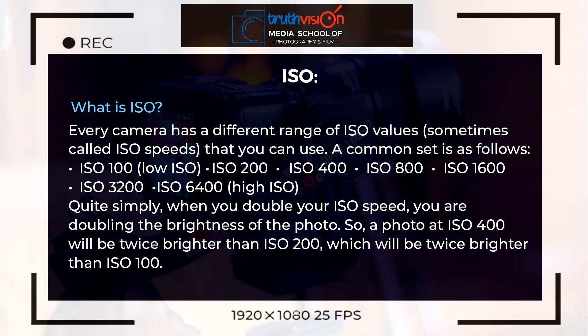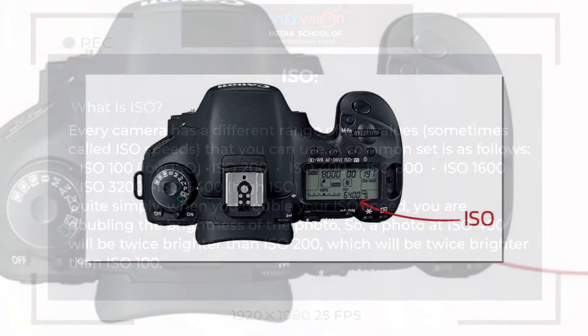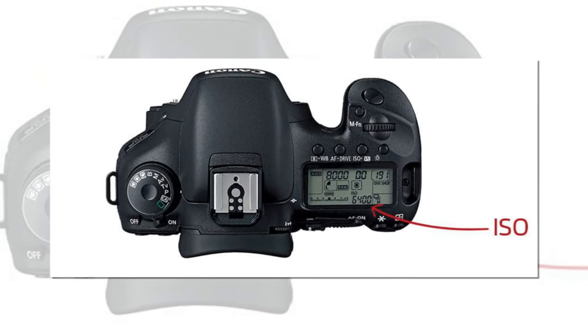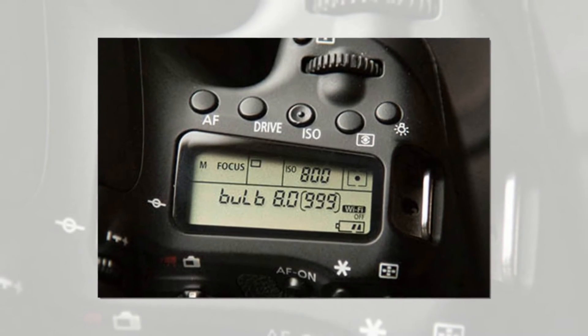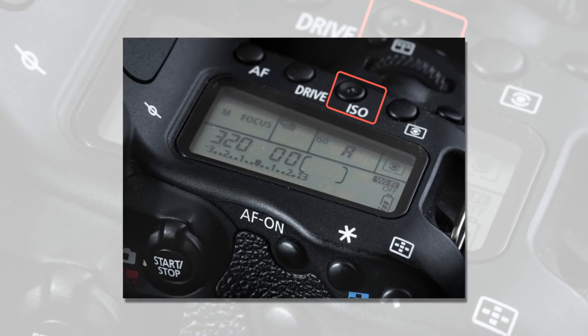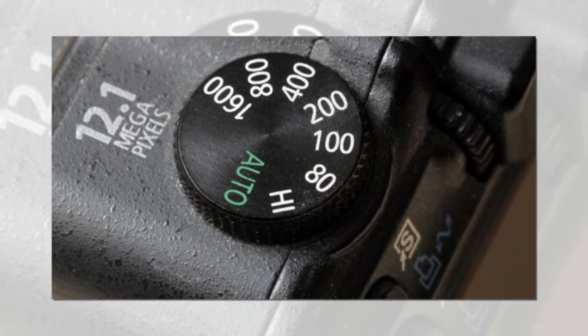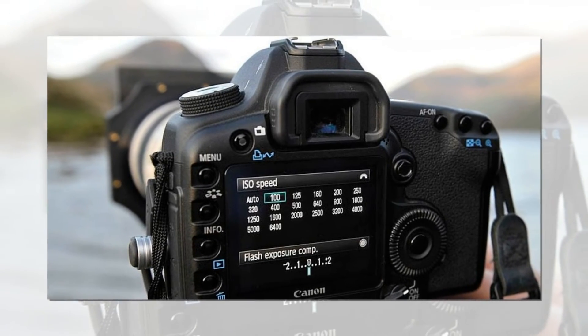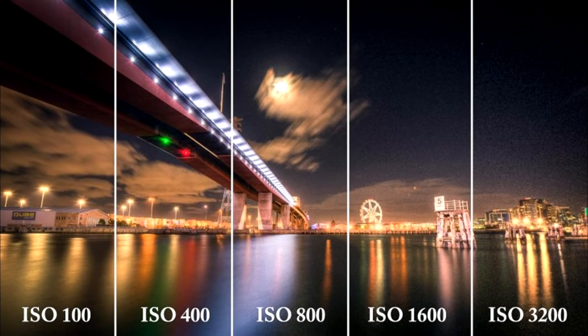The common ISO range I've seen from my experience in photography is between ISO 100 and ISO 6400. But some high-end cameras like the 7D, 6D, and 5D may go as high as ISO 10,000. It depends on which camera you have, but most beginner or entry-level cameras will have ISO 100 to ISO 6400.